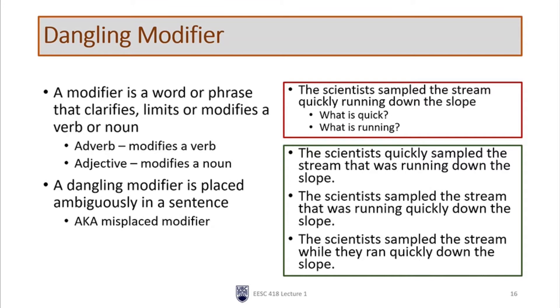Are the scientists quickly running down the slope, or is the stream quickly running down the slope? It's actually impossible to tell from the sentence which is which, and we don't want to make the reader assume one or the other, even if it's fairly obvious. So I've corrected this in three different ways.